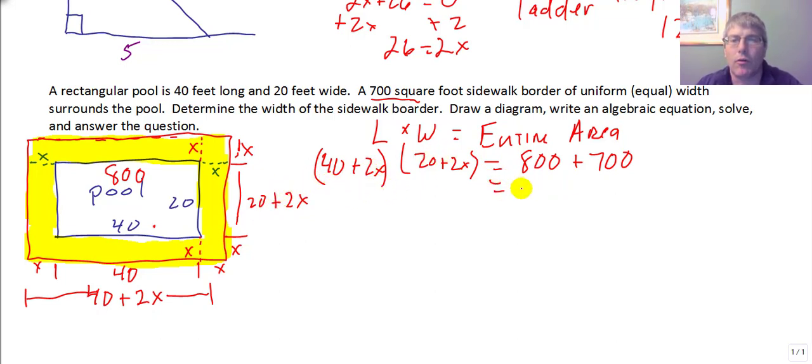Our total area is 1500 square feet. Something interesting here, I have a common factor in the 40 plus 2x. I can factor a 2 out of there. That becomes 20 plus x. And I can factor another 2 out of the 20 plus 2x, and that's 10 plus x. That equals our 1500.